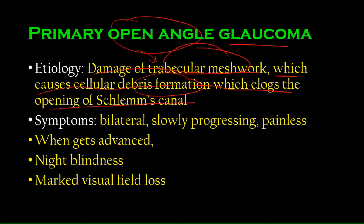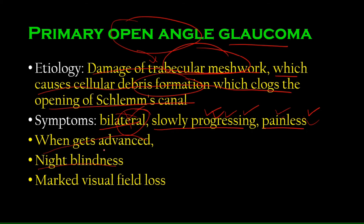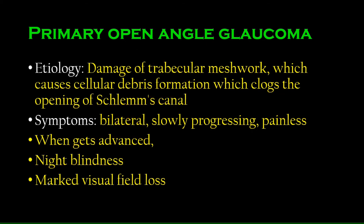The symptoms of primary open-angle glaucoma: it's usually bilateral, slowly progressing — unlike closed-angle glaucoma, which occurs very rapidly — and it's painless, while closed-angle glaucoma is painful. This can take years upon years to develop. When advanced, it can cause night blindness and visual field loss, because it's an optic neuropathy and a part of the retina is no longer working.